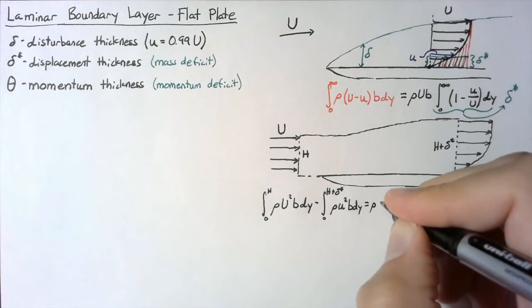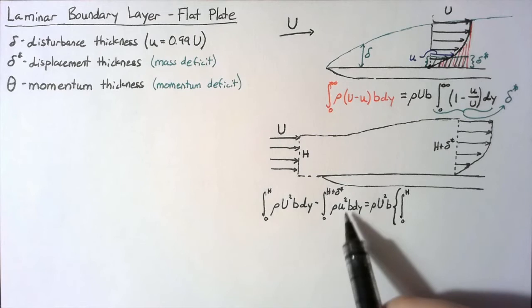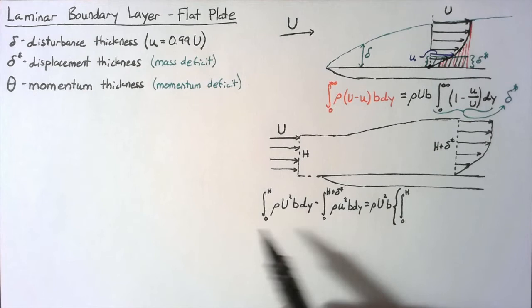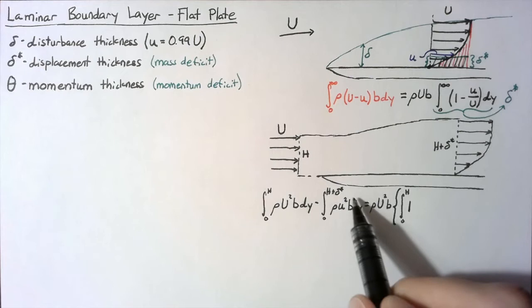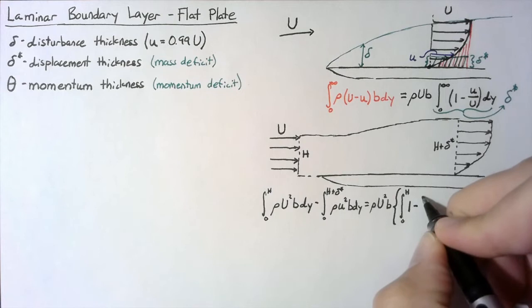We're going to have two separate integrals here. The first is going to be the integral from 0 to h. We're going to split up the second integral into an integral from 0 to h and an integral from h to h plus delta star. This first piece is easy — we've taken out all the constants and we just end up with 1. There's a piece of the second integral from 0 to h, and if we take rho U² b out of this integral, we end up with just lowercase u² divided by capital U².